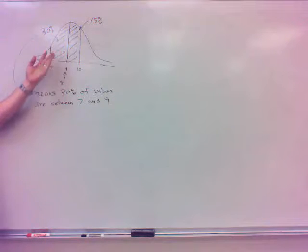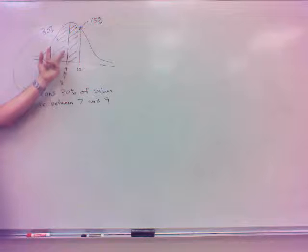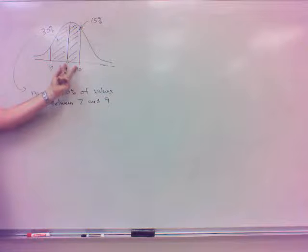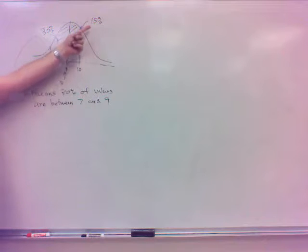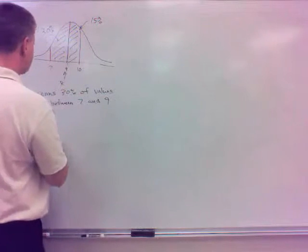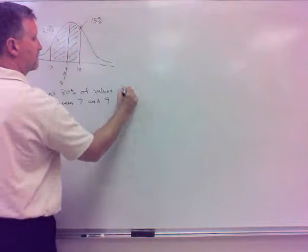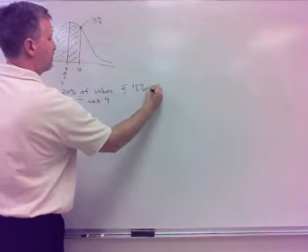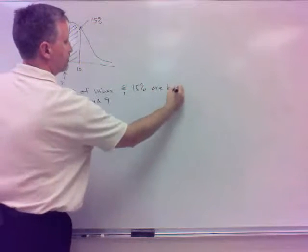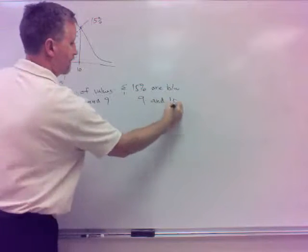But do you see what I'm saying here? Since this area here is 30%, 0.30, then that means 30% of the values are between 7 and 9. What does this mean? 15% are between 9 and 10, okay? So if you understand that, that's kind of what we're... So 15% are between 9 and 10.